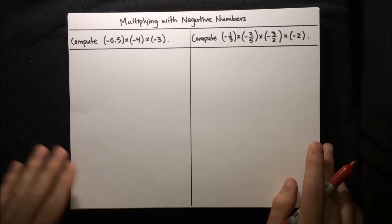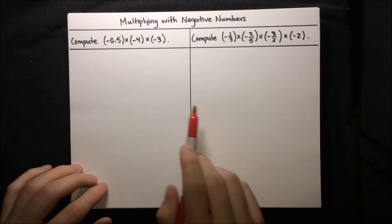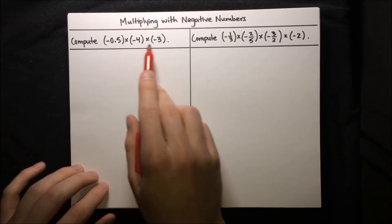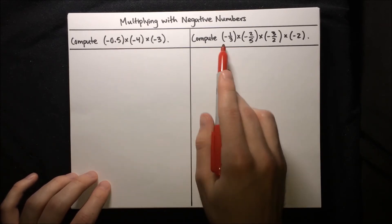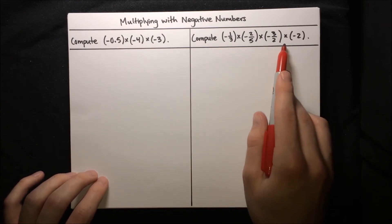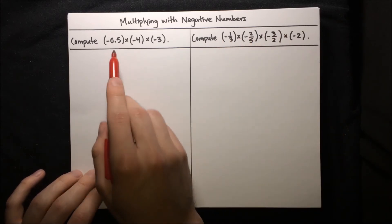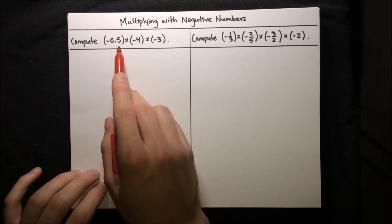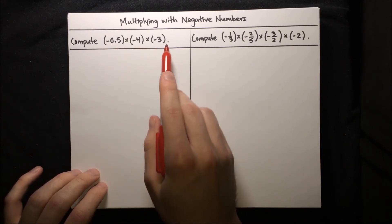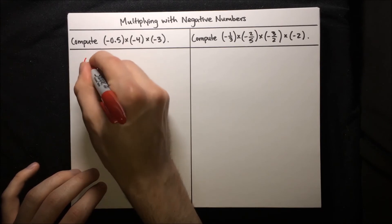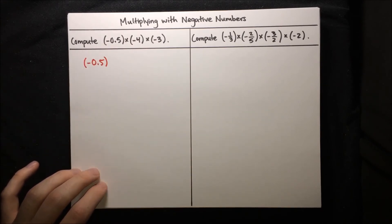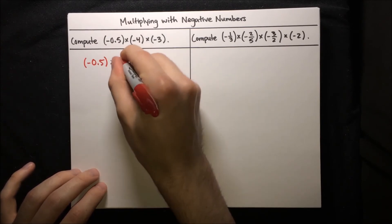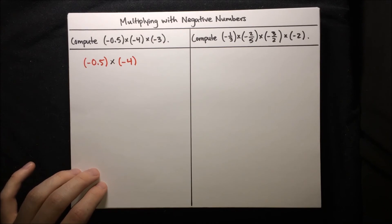Now let's try some trickier problems. We're multiplying three numbers in a row and there's a decimal. Compute negative 0.5 times negative 4 times negative 3. Let's write this down: negative 0.5 times negative 4 times negative 3.